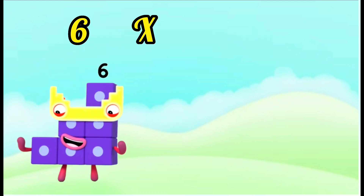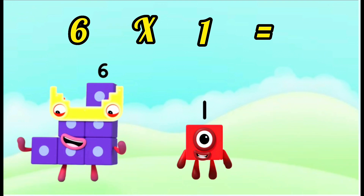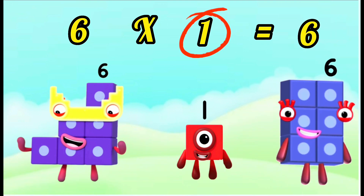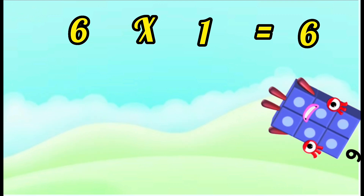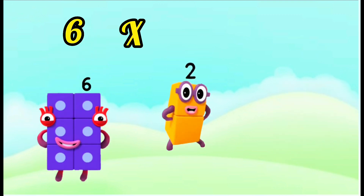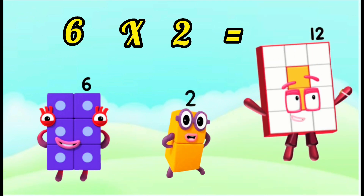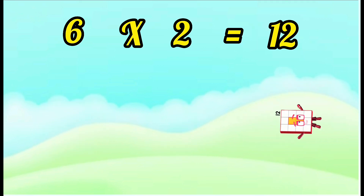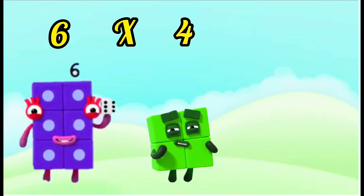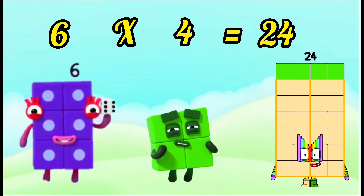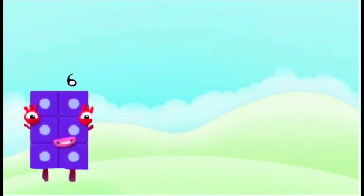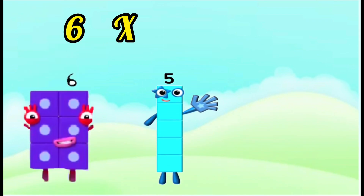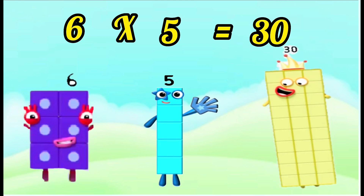6 multiplied by 1 is equals to 6, or 6 times 1 is equals to 6. 6 multiplied by 2 is equals to 12, or 6 times 2 is equals to 12. 6 multiplied by 4 is equals to 24, or 6 times 4 is equals to 24. 6 multiplied by 5 is equals to 30, or 6 times 5 is equals to 30.